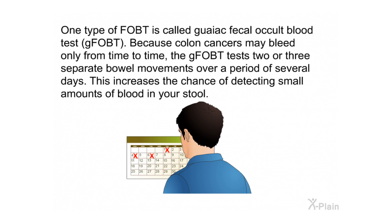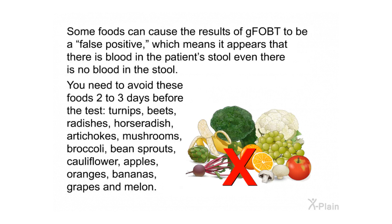How to Prepare. One type of FOBT is called the guaiac fecal occult blood test (G-FOBT). Because colon cancers may bleed only from time to time, the G-FOBT tests two or three separate bowel movements over a period of several days. This increases the chance of detecting small amounts of blood in your stool.